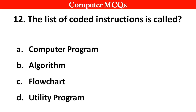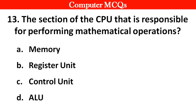Next question. The list of coded instructions is called — Options A: Computer program, B: Algorithm, C: Flowchart, D: Utility program. Right answer is option A: Computer program.